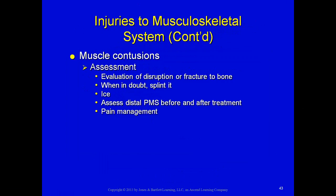Evaluate for a disruption or fracture: do they have point tenderness, swelling, or other signs commonly seen with fractures? If in doubt, it is advisable to splint it, put some ice on it, and check CMS before and after applying any splint — referred to here as PMS (pulse, motor, sensation) or CMS (circulation, motor, sensory). Assess their distal function and administer pain medications. Those could be morphine, fentanyl, or ketorolac — ketorolac being the least effective but an NSAID.